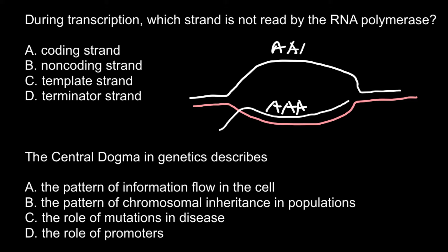When we have cytosine and guanine on this strand of the DNA, we have also cytosine and guanine on the mRNA. So whenever we have anything here, the same code we have on this strand of the DNA. That's why we call this the coding strand of the DNA, because the sequence of bases would be the same as here.